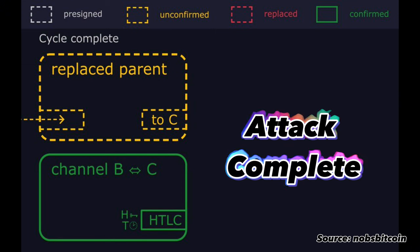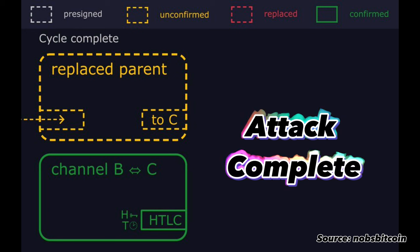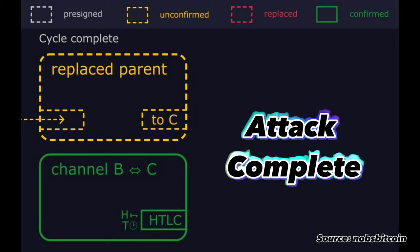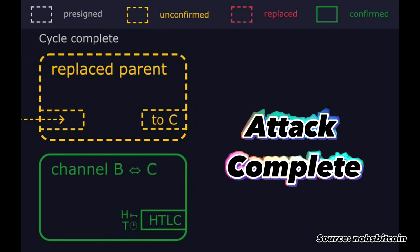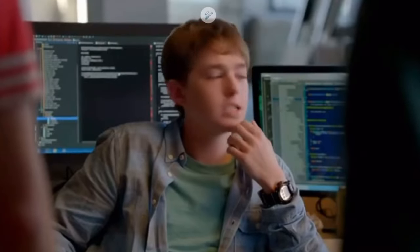At the end of this cycle, the HTLC from Bob's channel with Carol ends up unspent, and no trace of the HTLC timeout and the HTLC pre-image transactions remain in the mempool. The attackers repeat this cycle to eject Bob's HTLC timeout transaction every time he rebroadcasts it. If they prevent it from getting mined for another Delta blocks, Alice can timeout the HTLC on the other channel and leave Bob out of pocket for the entire value of the payment. Yikes.